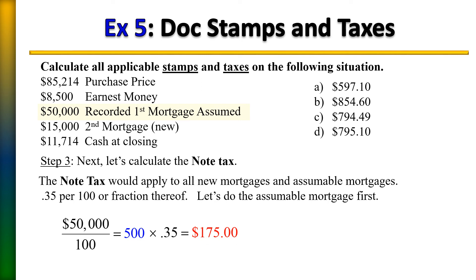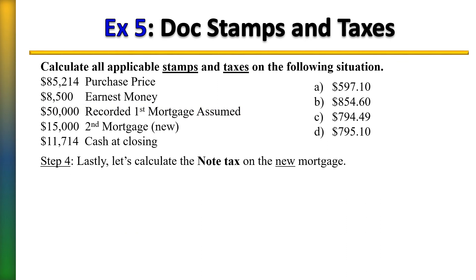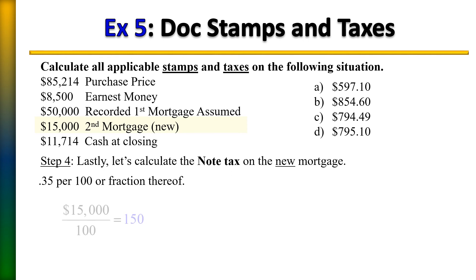Lastly, we find the note tax for the new mortgage of $15,000. Again, it's 35 cents per 100 or fraction thereof. We divide $15,000 by 100 and then multiply that amount by 35 cents, which gives us the note tax for the new mortgage.